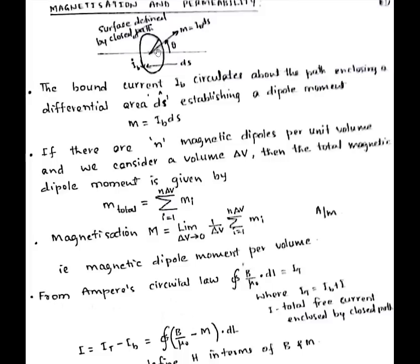Here we have one closed path with a line corresponding to it, moving in a particular direction. The surface defined by the closed path is the outer circle, and the inner path is represented as dS. The angle formed by the direction of propagation and the line of the closed path is angle theta. The current flowing through this closed path is represented as ib.